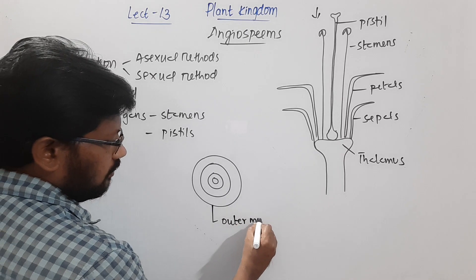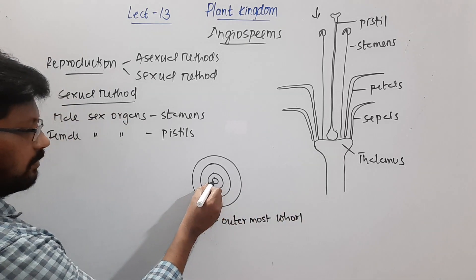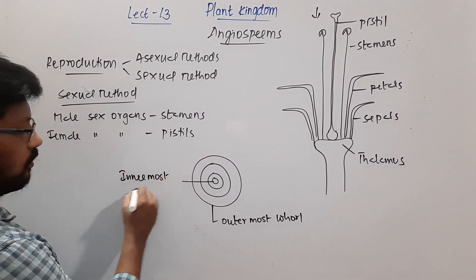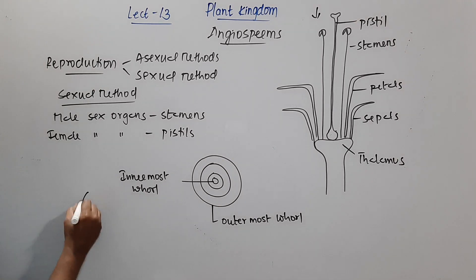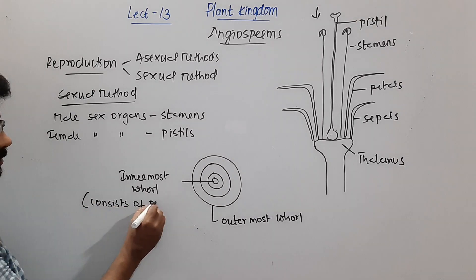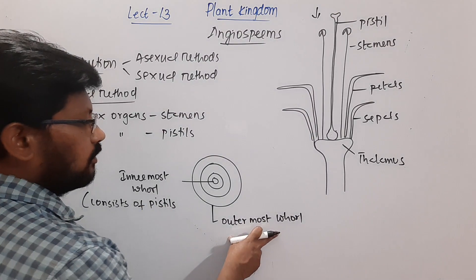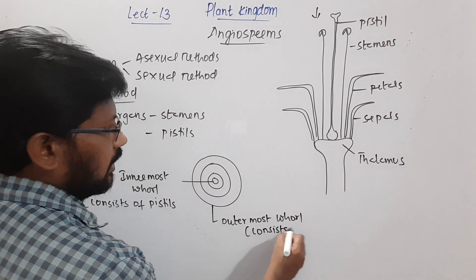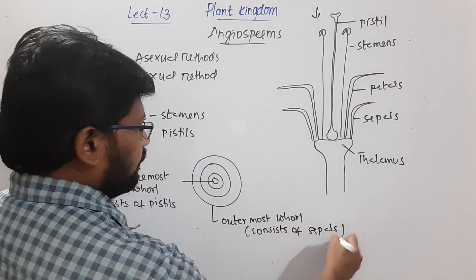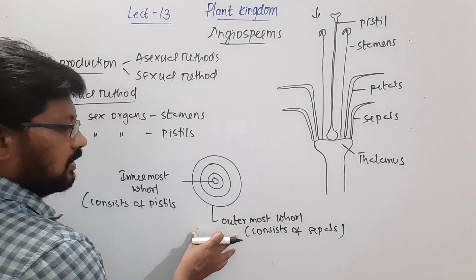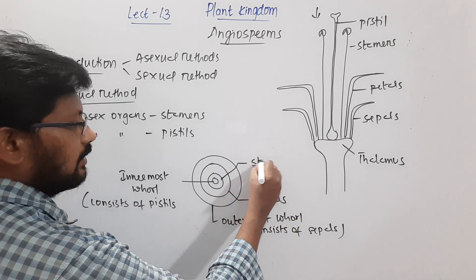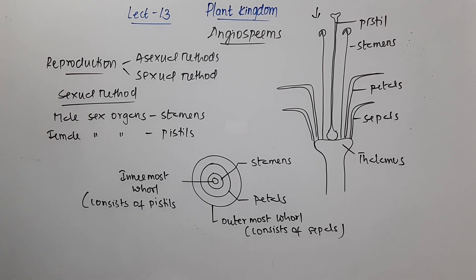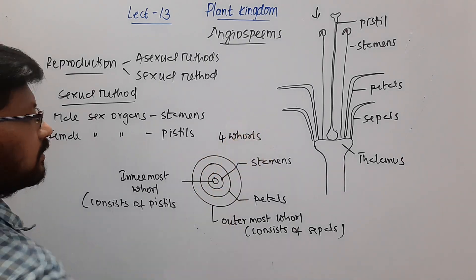The outermost whorl consists of sepals. After the sepals we see the petals. Then we have the stamens, and the innermost whorl consists of pistils. This is how the floral parts are arranged in four whorls.